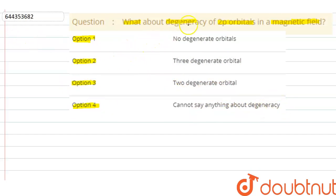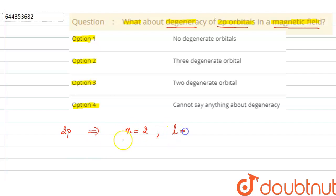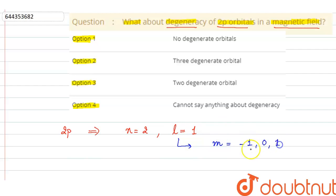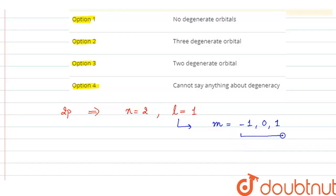Here we have to tell about the degeneracy of 2p orbitals in a magnetic field. Now, for 2p, the value of the principal quantum number is 2 and the value of the azimuthal quantum number L is 1, because for p the value of L is 1. We know that for a given value of L, the magnetic quantum number M can have values from minus L to plus L. So the possible values of M are minus 1, 0, and plus 1, meaning there are basically 3 orbitals for the p subshell.